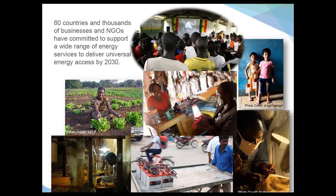Since its establishment in 2011, SE for All has mobilized a number of stakeholders and organizations to work together. There are about 106 countries including the EU who have partnered with Sustainable Energy for All. Roughly 85 developing countries are now either working on or working towards the development of their own country action agendas and investment perspectives, embedding and mainstreaming these three major goals within their own country's development plans and policies. That's encouraging news in terms of the breadth and scope SE for All has been able to achieve.